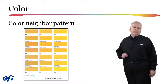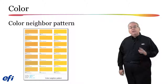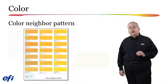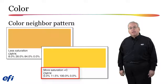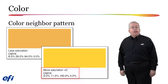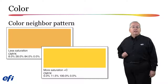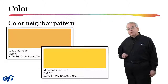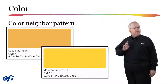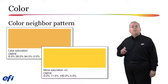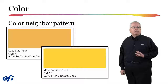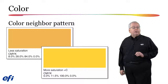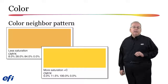If the color neighbor pattern method is selected, each of the icons will be printed as a color patch along with the color ink recipe used to print it. You can use the printed sample and the recipe to finalize the color definition. The color neighbor pattern method offers an additional benefit: you can put your output on hold, generate neighbor patterns for a number of spot colors, and nest them together to save media.